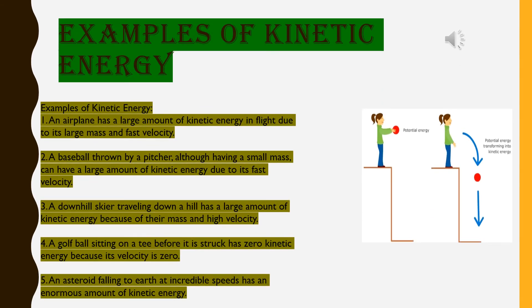Examples of kinetic energy. First one, an airplane has a large amount of kinetic energy in flight due to its large mass and fast velocity. Second one, a baseball thrown by a pitcher, although having a small mass, can have a large amount of kinetic energy due to its fast velocity. Number three, a downhill skier traveling down a hill has a large amount of kinetic energy because of their mass and high velocity.